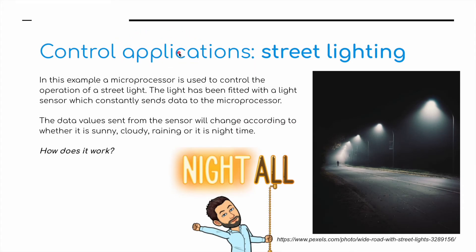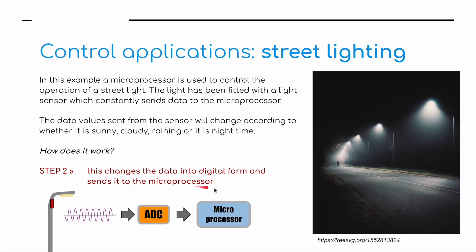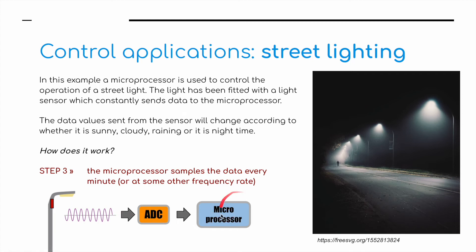Let's look at some control applications that use sensors — for example, street lighting. A microprocessor is used to control the operation of a street light. The street lights are fitted with a light sensor which constantly sends data to a microprocessor. The data values sent from the sensor will change according to the weather — sunny, cloudy, rainy, or nighttime. In step one, the light sensor fitted to the street light sends data to the ADC interface. In step two, this changes the data into digital form and sends it to the microprocessor. In step three, the microprocessor samples the data every minute, or at some other frequency, and keeps checking this data against the data stored on the microprocessor.